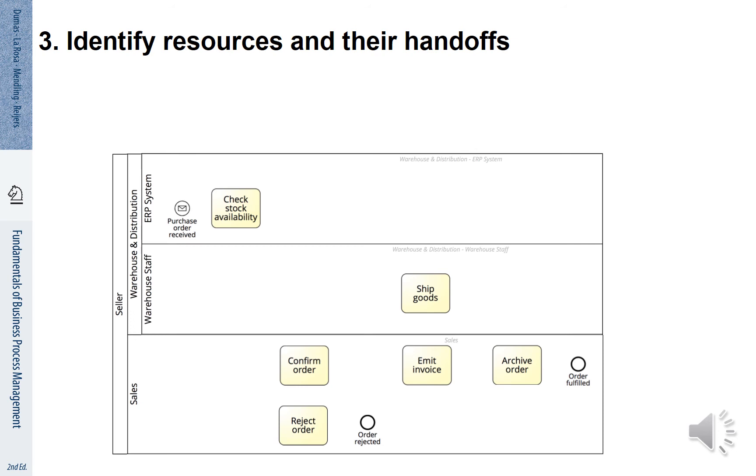This helps us now to identify handoffs. We identify a handoff between the ERP system and the sales department. There is another handoff between sales and the warehouse staff. And from the warehouse staff there is a handoff back to the sales department.